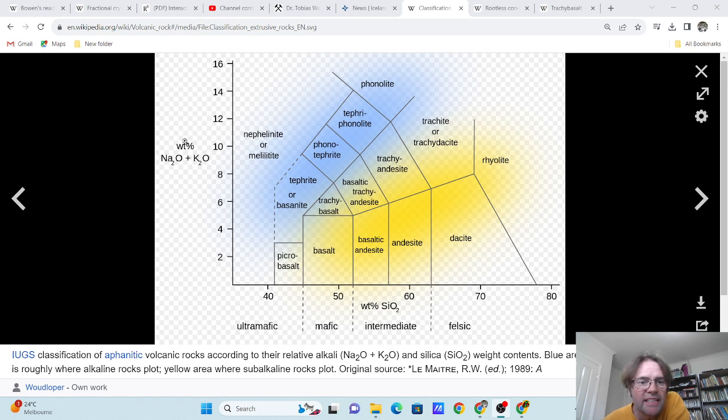Alkali classification is based on sodium oxide (Na2O) and potassium oxide (K2O), which we have here. The alkali rocks are represented in blue; they have a high content of sodium and potassium, while subalkali rocks have a lower content of sodium and potassium.